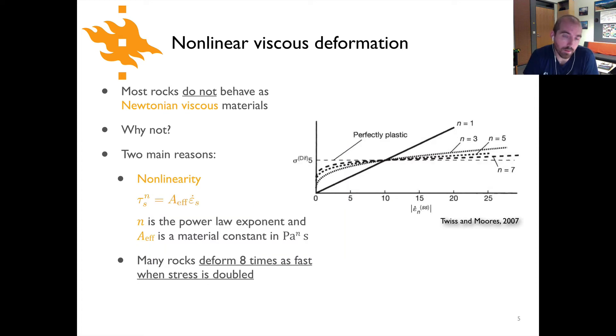A second reason for the non-linearity in viscous deformation of rock actually is simply a function of the material itself. Rock doesn't generally deform in a linear manner. And what that means is that if you look at the plot here of stress versus strain rate for a linear viscous material, we expect to see straight lines, and for most rocks we don't observe that behavior. Let's see what that looks like mathematically and then we'll go back to this figure.